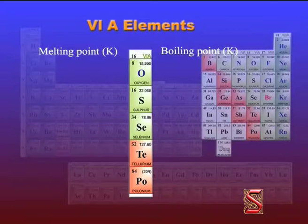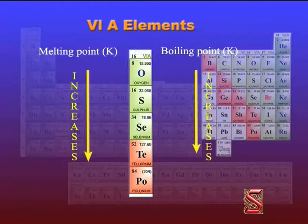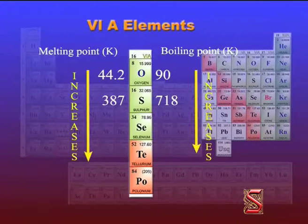The next property is melting and boiling points. The melting and boiling points increase from oxygen to tellurium. The large difference in melting and boiling points between oxygen and sulfur is due to the fact that oxygen exists as diatomic molecules while sulfur exists as octa-atomic molecules.